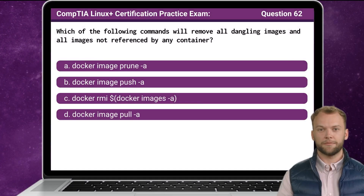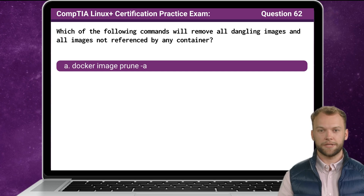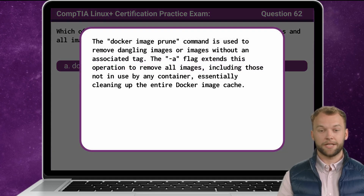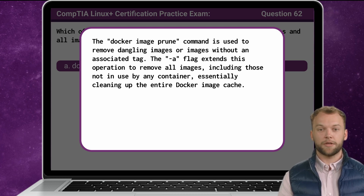Question 62. Which of the following commands will remove all dangling images and all images not referenced by any container? The answer is A: docker image prune -a. The docker image prune command is used to remove dangling images, or images without an associated tag. The -a flag extends this operation to remove all images, including those not in use by any container, essentially cleaning up the entire Docker image cache.